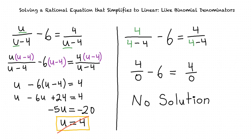So to solve a rational equation with like binomial denominators, we first rewrite the equation without fractions by multiplying both sides by the denominator, and then solve the resulting equation for x. We can check our answer by substituting the value of x back into the original expression.